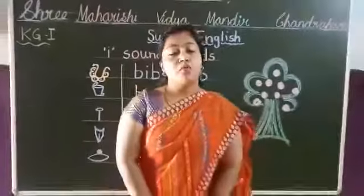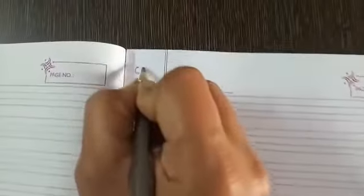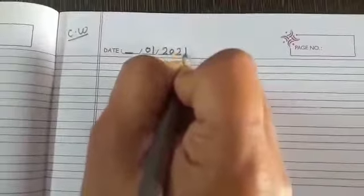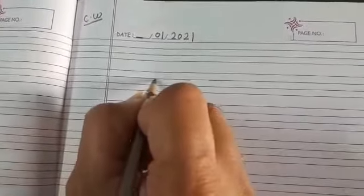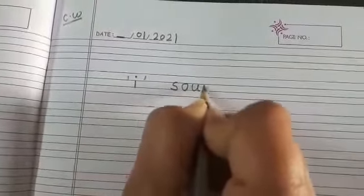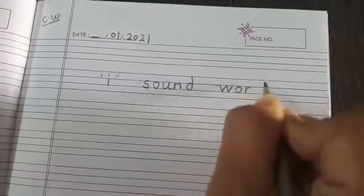Now open your English notebook. Here we will write C.W. — classwork. Date, month 01, year 2020-21. Now here I am writing the heading: I-sound words.